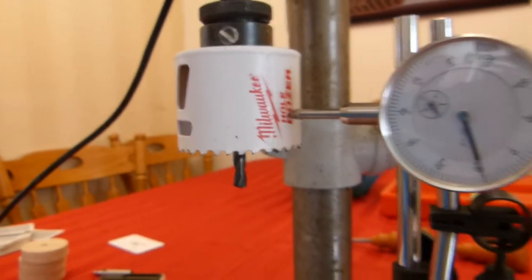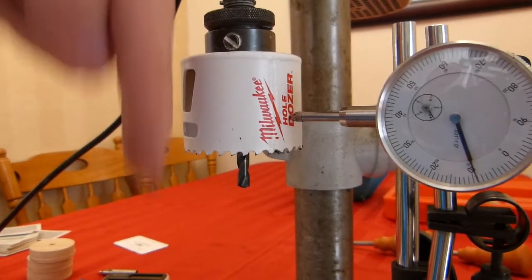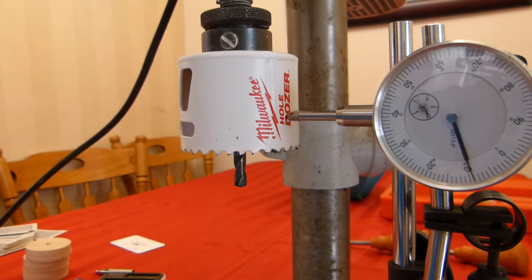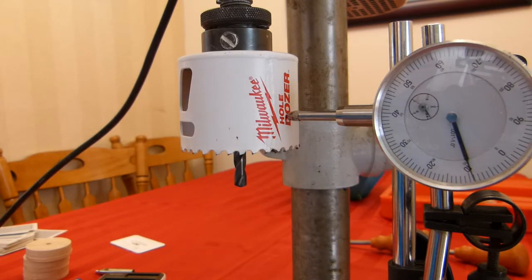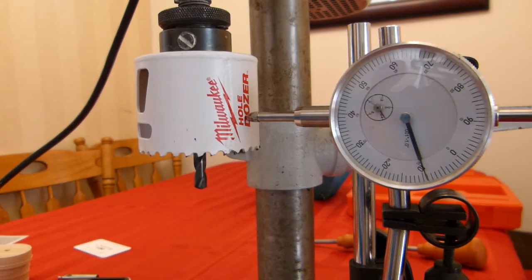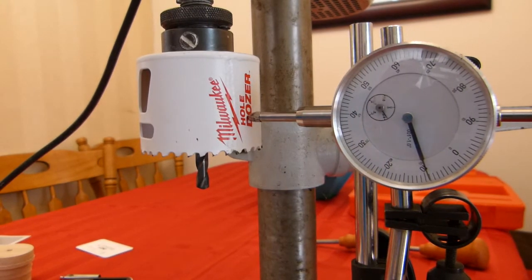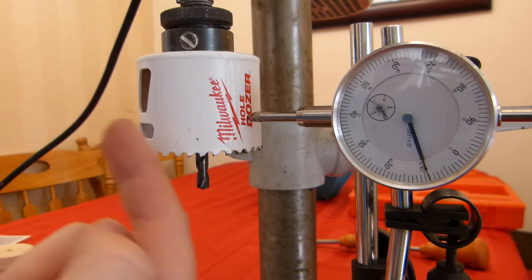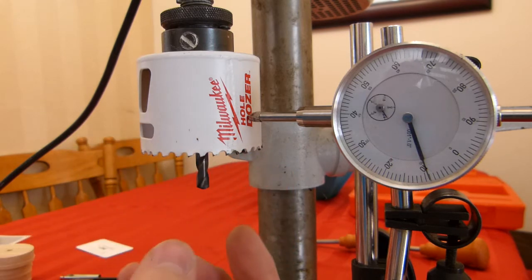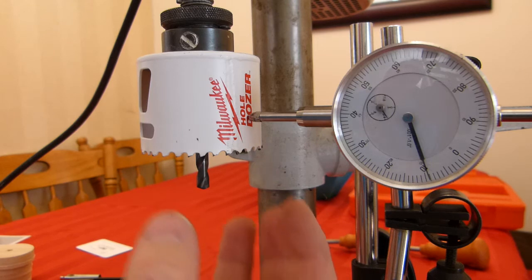At the moment the hole saw bit is mounted in a drill press vertically down. I will take it out after the measurement and is connected to a dial gauge or dial indicator to measure run out. Run out is a measurement that will tell me about the circularity of the hole saw bit.